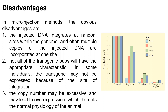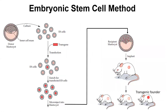After talking about micro injection, we would like to jump to the next method: engineered embryonic stem cells. Embryonic stem cells are derived from the blastocyst stage, which is one of the stages of embryo development. At the blastocyst stage, especially in mice, these cells can proliferate and retain the ability to differentiate into all other cell types, including the germline cells.